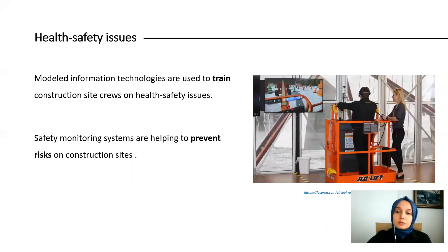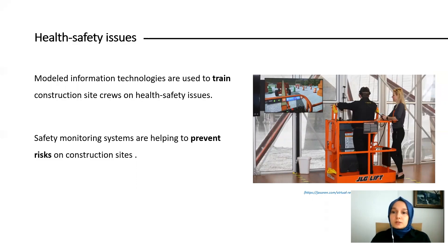Although research on health and safety issues at construction sites is high, construction site accidents continue to occur. Building information models are used to train construction site workers on health and safety issues. Furthermore, safety monitoring systems are helping to prevent risks on construction sites.